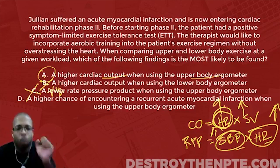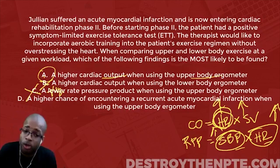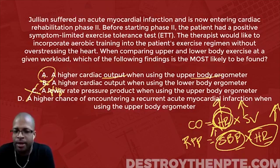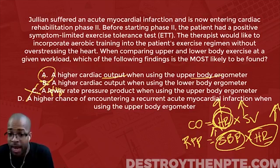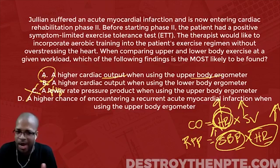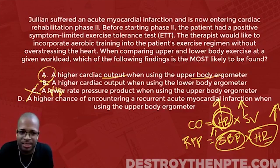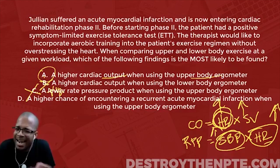Here's the deal — what does the question ask you for? The question says, when comparing upper and lower body exercise at a given workload, which of the following findings is most likely to be found? A higher chance of encountering a recurrent MI is not a finding. Maybe that's something from research, but that's not a clinical finding of yours. A finding would be the increased heart rate, the increased cardiac output, the increased rate pressure product — because we calculate systolic blood pressure and heart rate — those are findings. So D does not answer the question, even though it's true.